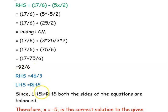Our left hand side equals our right hand side, so the equation is balanced. Therefore, x equal to minus 5 is the correct solution to the given equation.